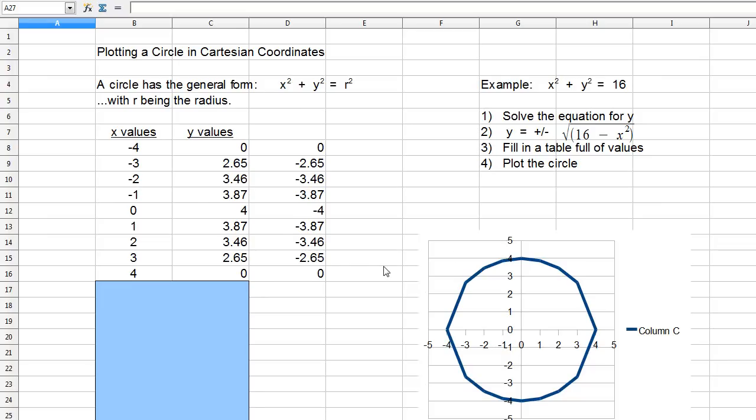In this lesson, we'll look at the problems associated with plotting a circle in Cartesian coordinates. This is typically how you're taught initially, with the equation x² + y² = r², where r is the radius.